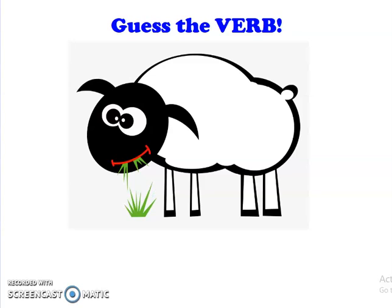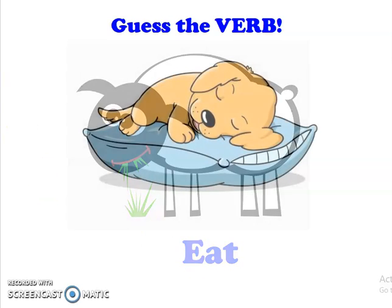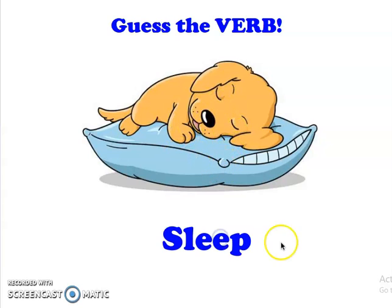Let's play this quick game: Guess the verb. Guess the verb that can describe the action of this sheep. The sheep can eat. Picture number two. Guess the verb that can describe the action this dog is doing. The dog can sleep. The verb here is sleep.